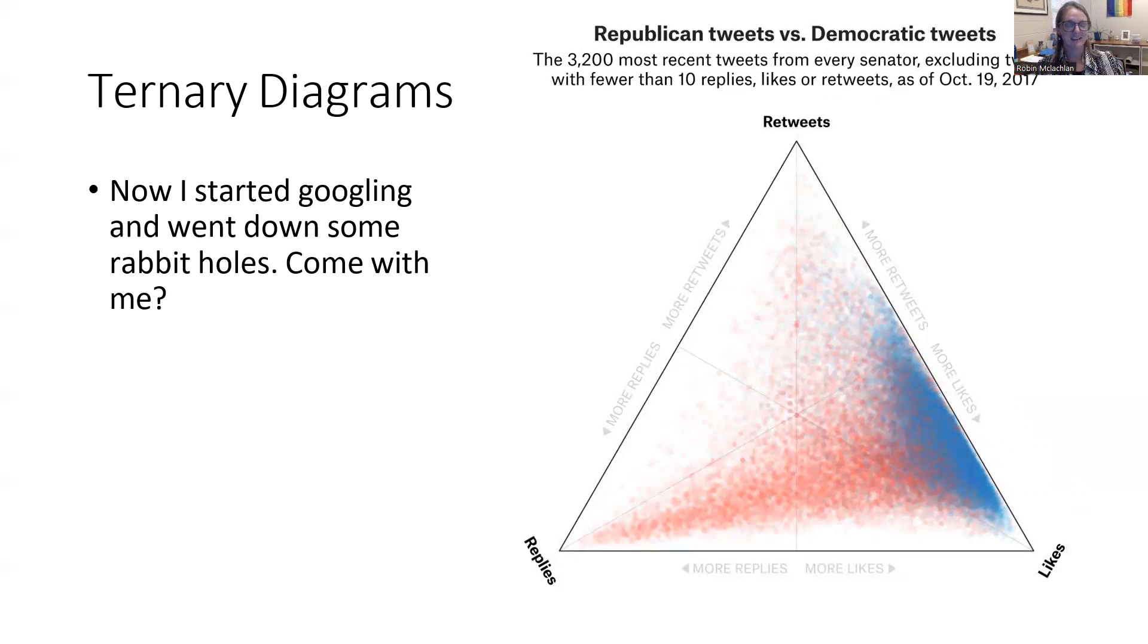And this is showing Republicans and Democrats overall. Again, most people just like things, but Democrats are more likely to retweet, whereas Republicans are more likely to reply. So it's getting into the social politics of how people interact with each other on Twitter, which I think is pretty cool.